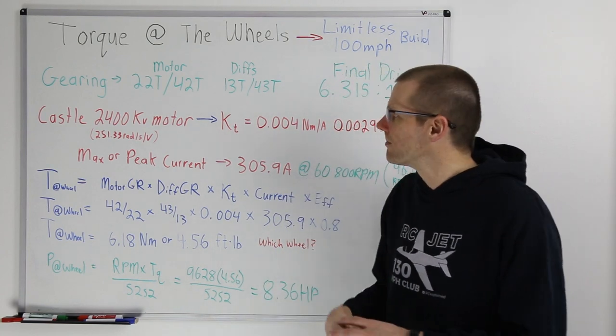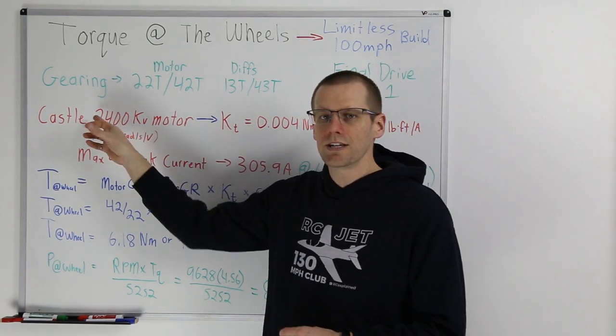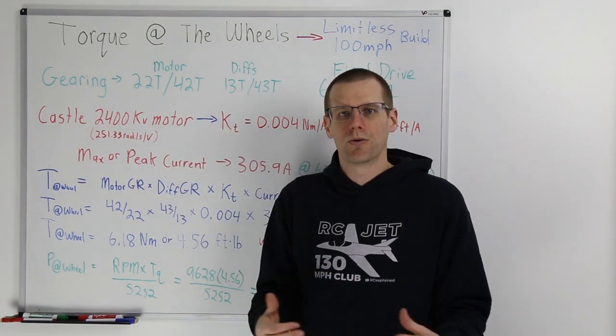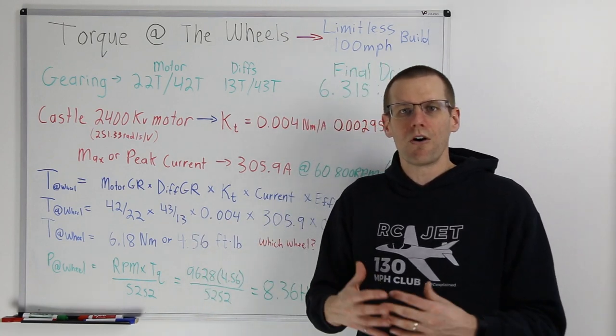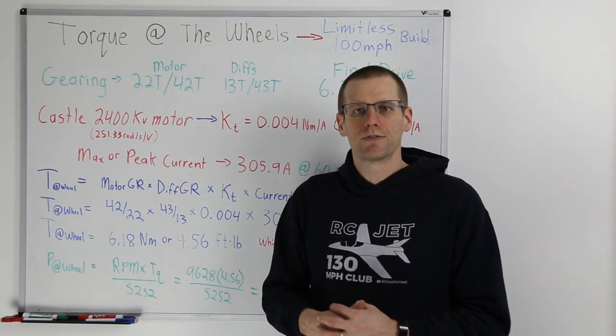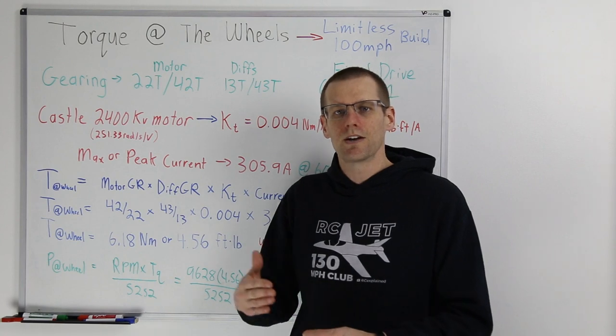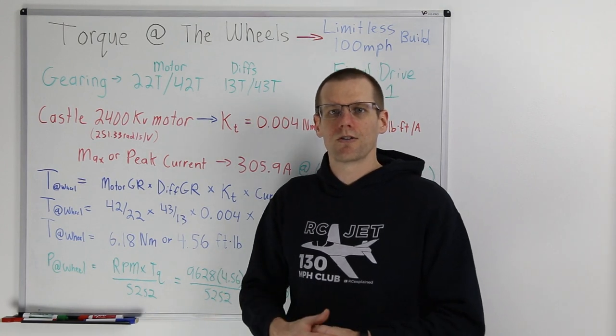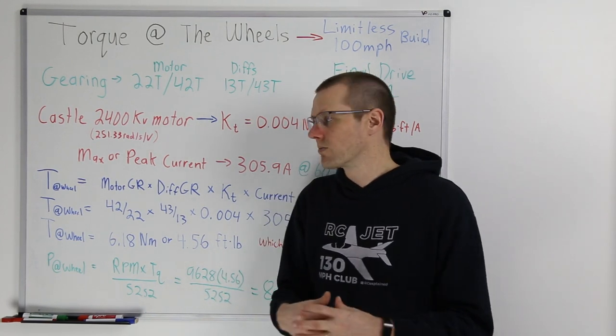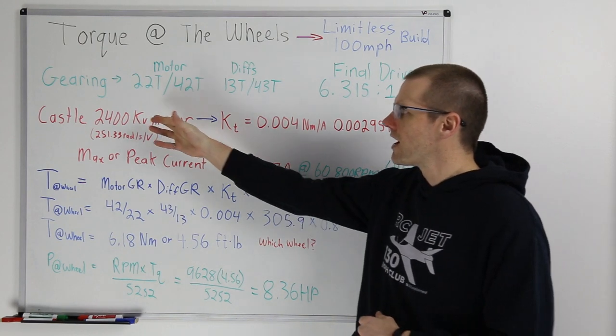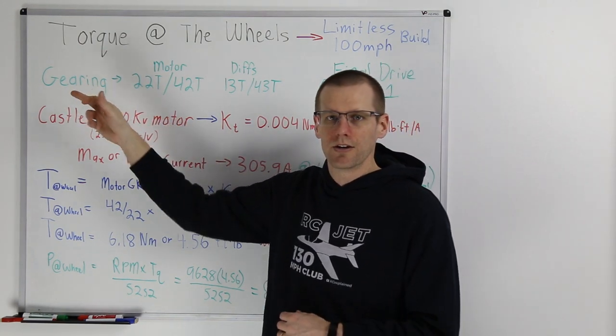In this week's video, we're going to be talking about the torque that we get at the wheels for our limitless build. Now our limitless build was a 100 mile per hour build utilizing the Castle 2400 kV motor. Up on the board, we're going to have all the specifications that we'll have to have in order to get the calculation for the theoretical amount of torque that we can get at the wheels for this vehicle. Let's start off by taking a look at the gearing.